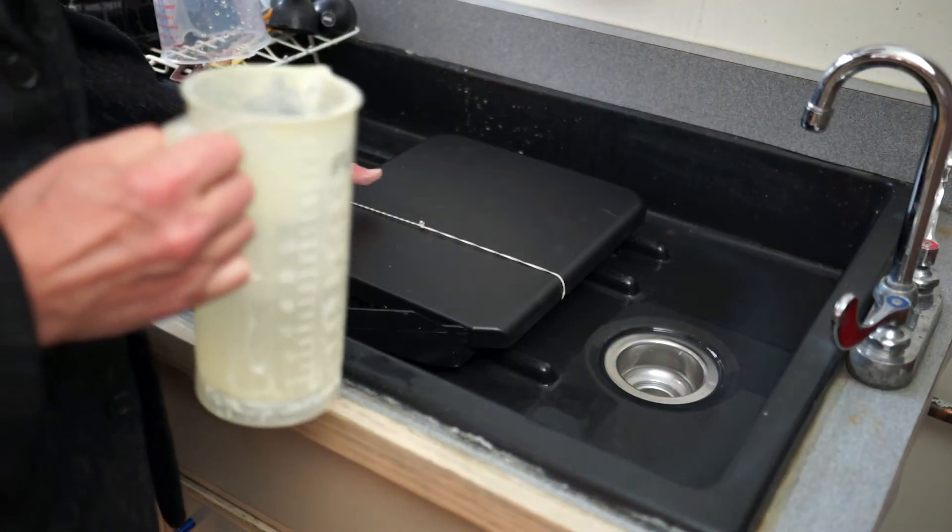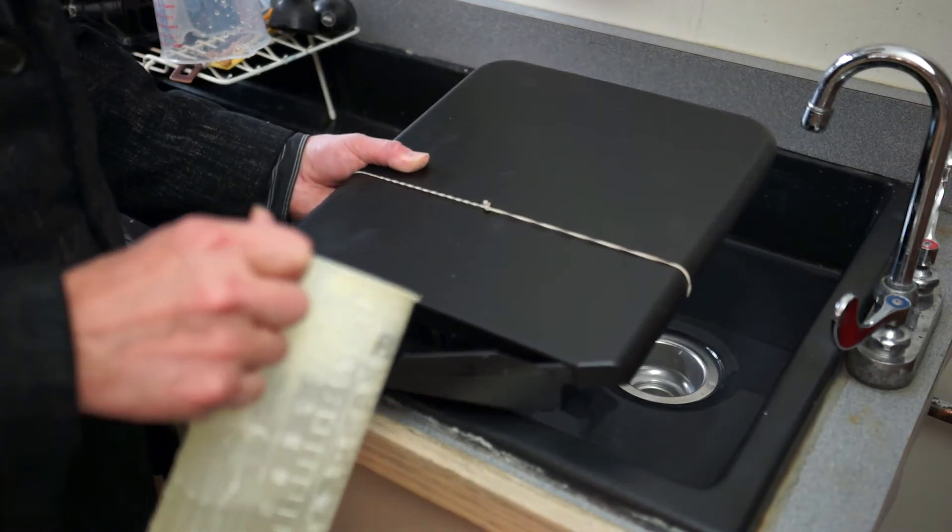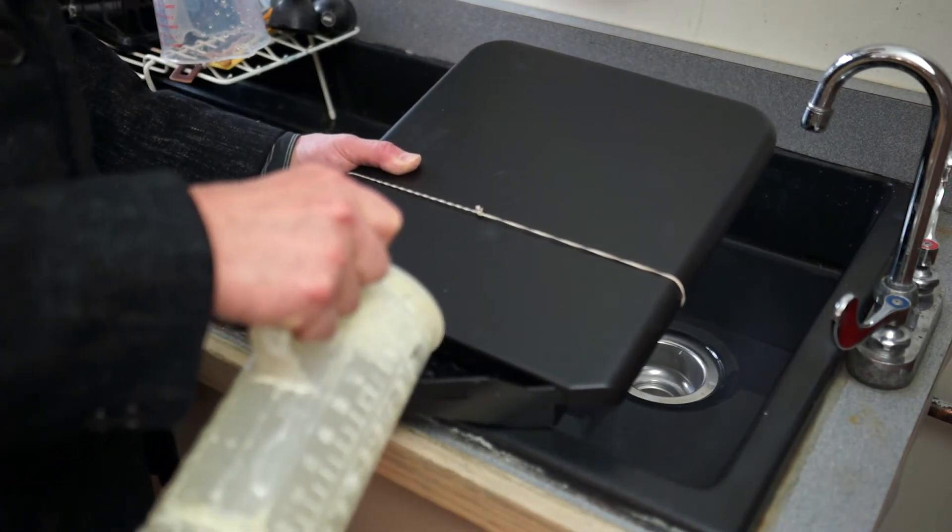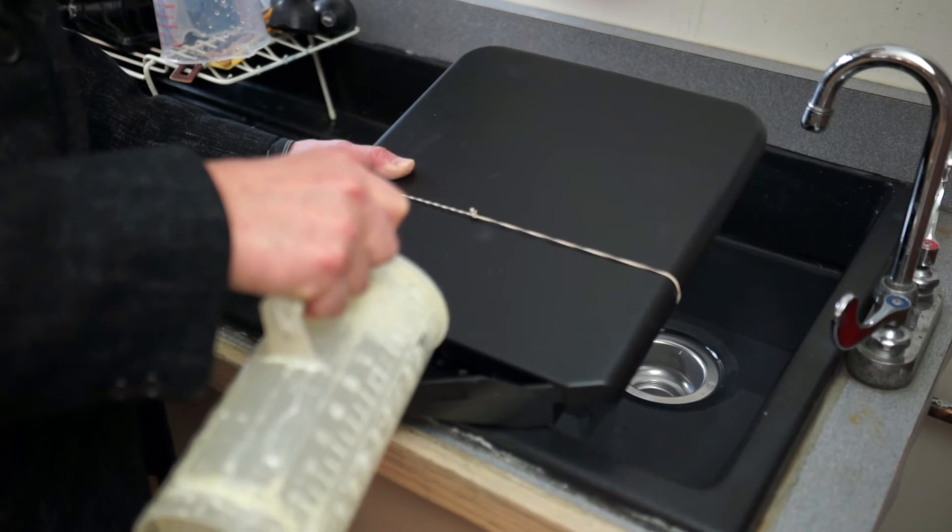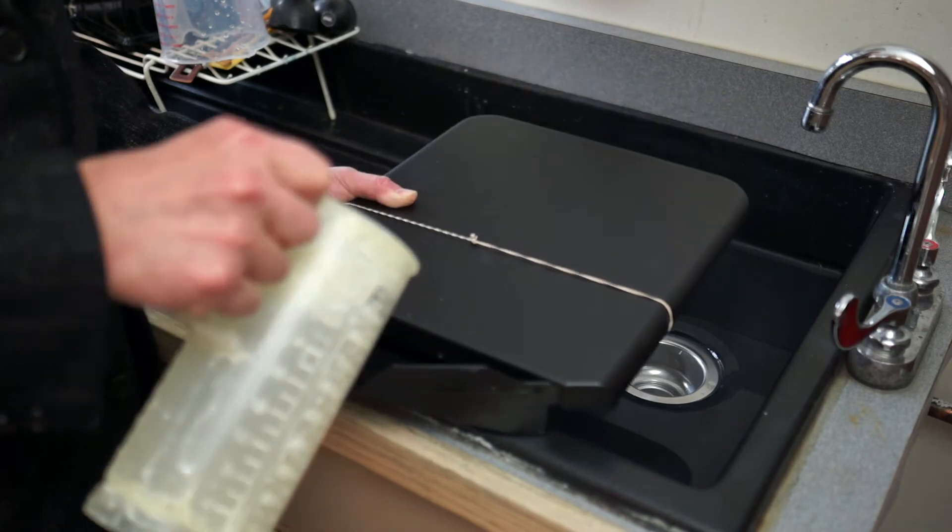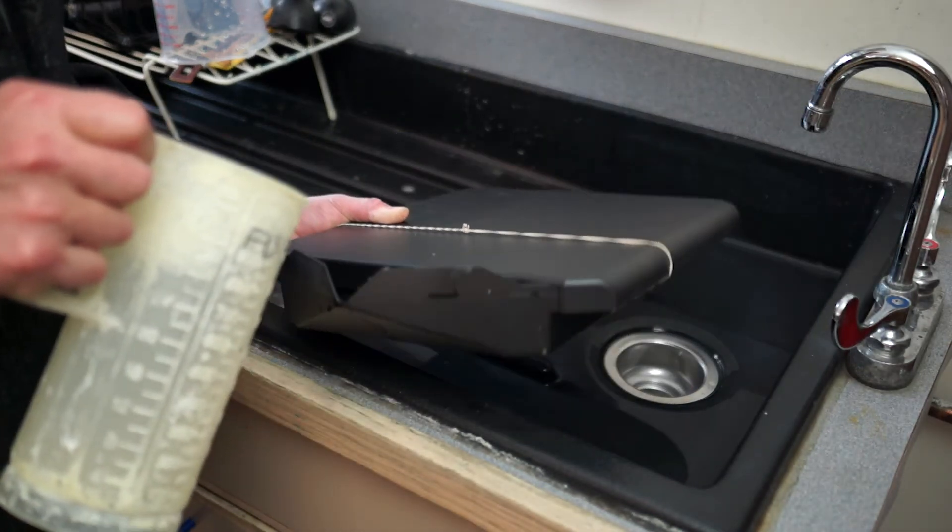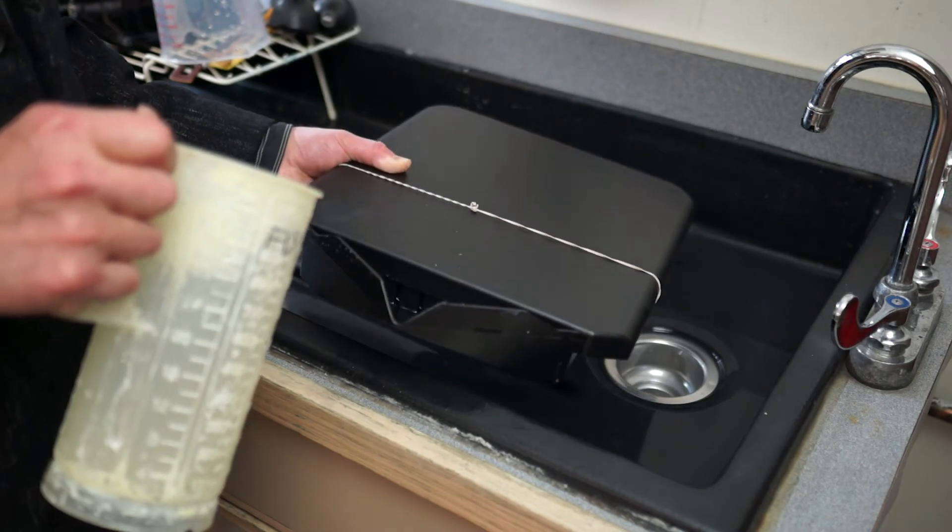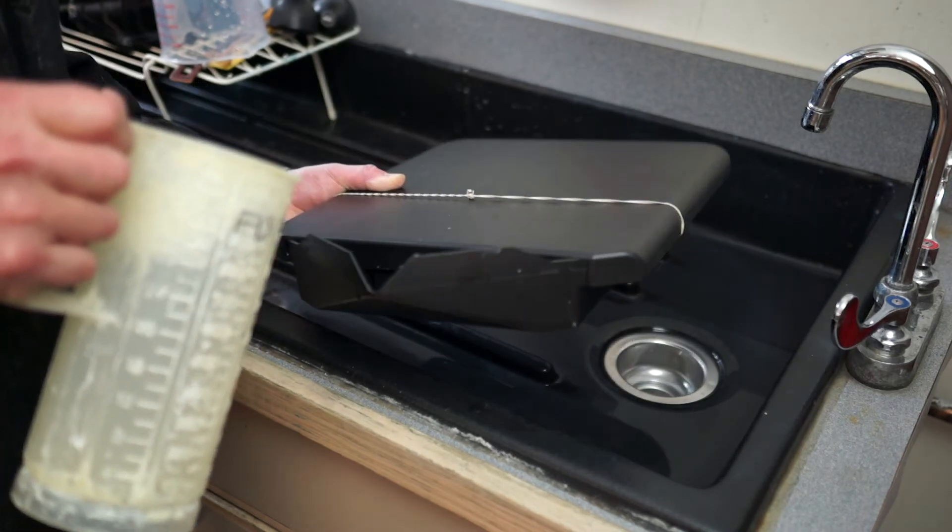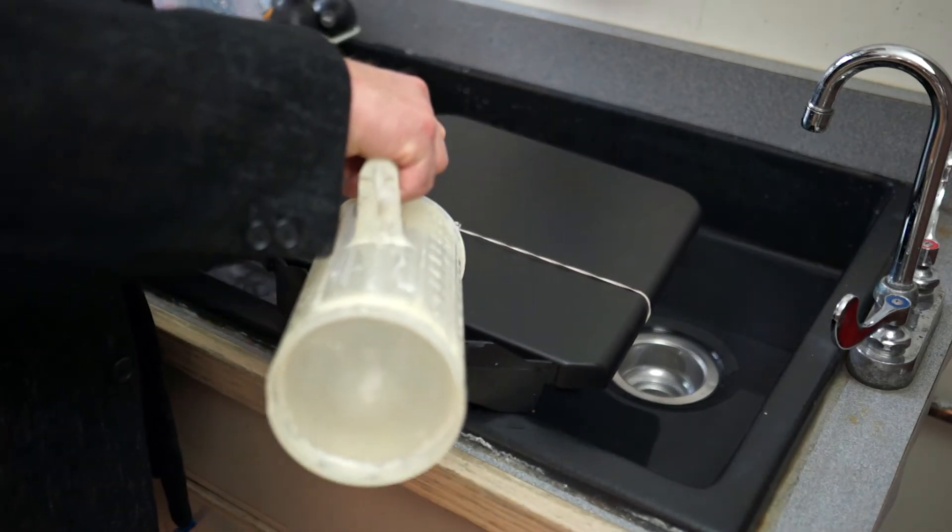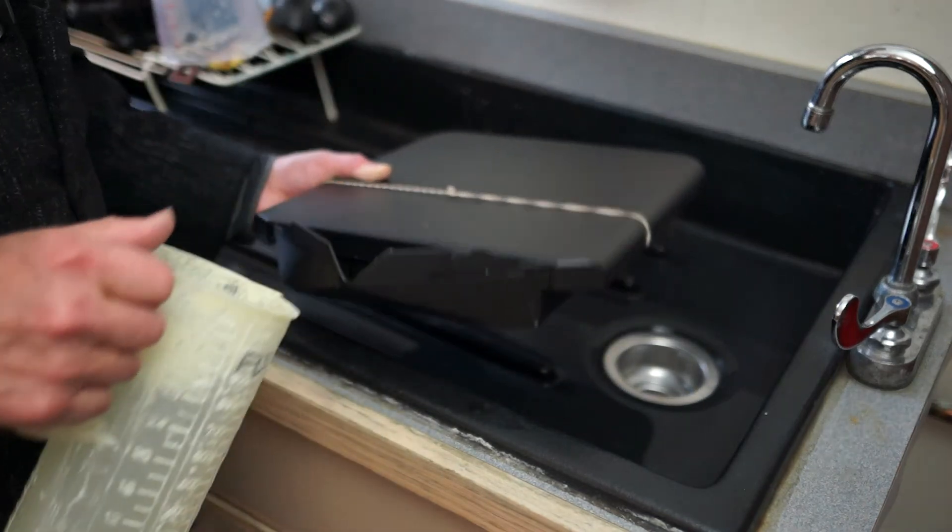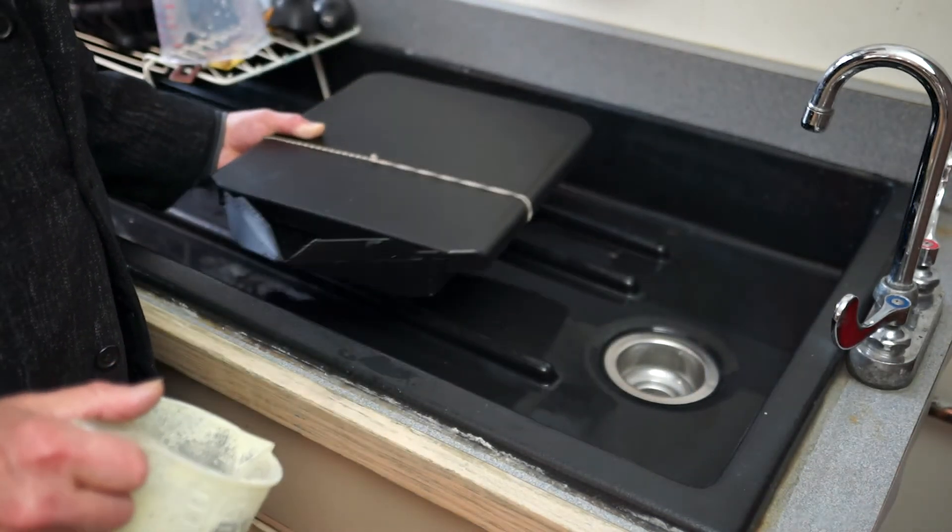Next step is the fixer, which is pretty much a repeat of the developing. Let it collect in the front of the tray here with it tipped forward and then try to coat the film with the fixer as thoroughly as possible. Let it sit.